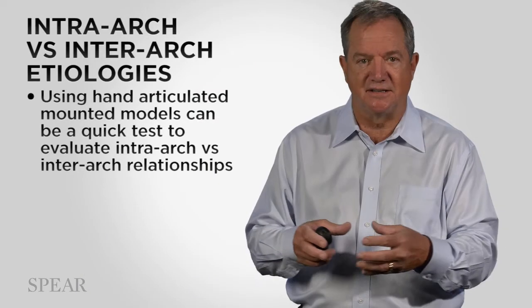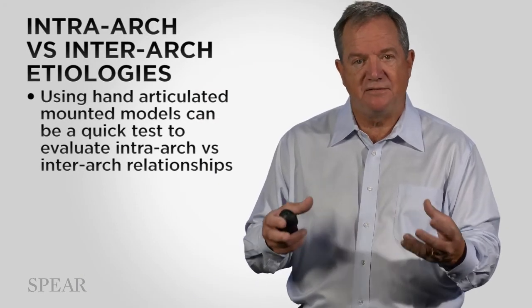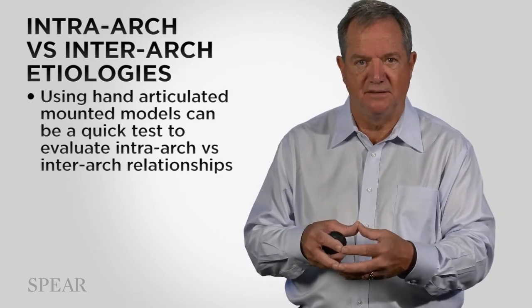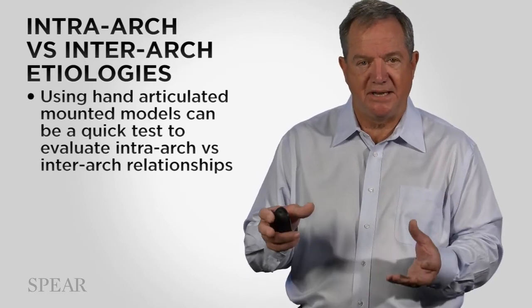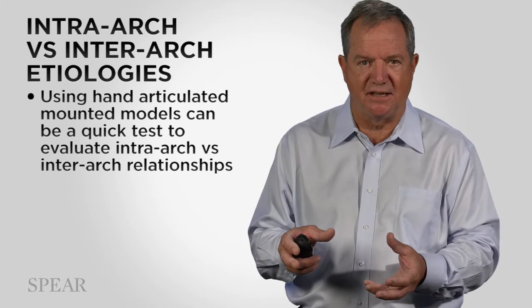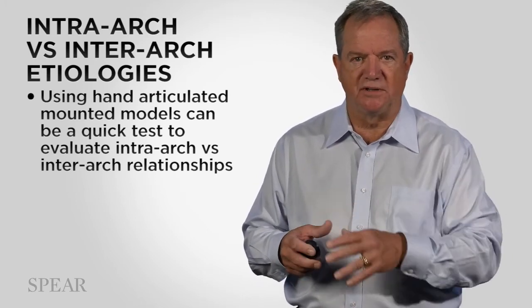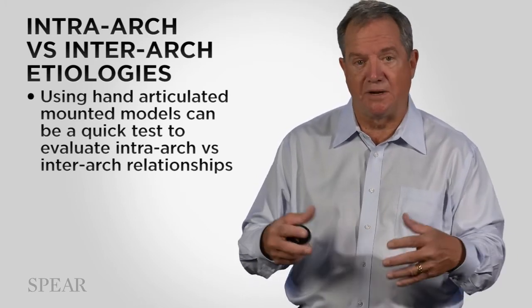When I see an anterior open bite, one of the very first things I would do is make study models. A very helpful tool for diagnosis is to try and hand articulate the study models. If when you hand articulate the study models they fit well, but the patient can't get their front teeth together in the mouth, what you know is that the intra-arch relationships are probably acceptable.